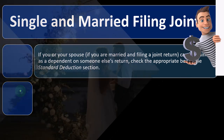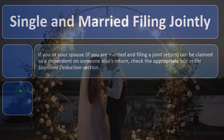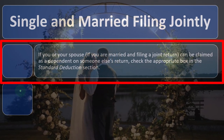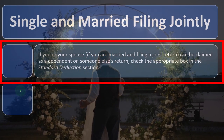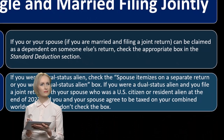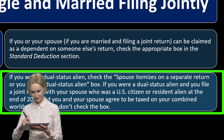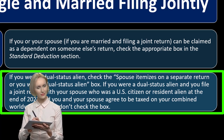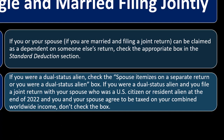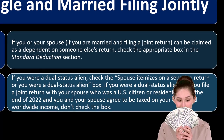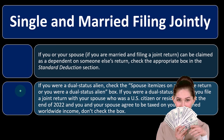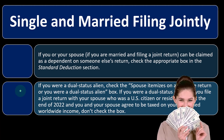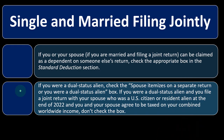For single and married filing jointly: if you or your spouse can be claimed as a dependent on someone else's return, check the appropriate box in the standard deduction section. If you were a dual-status alien, check the 'spouse itemizes on a separate return or you were a dual-status alien' box. These are a couple of checkboxes up top — one if someone else can claim you, and one for the dual-status alien, which is a more unusual situation.